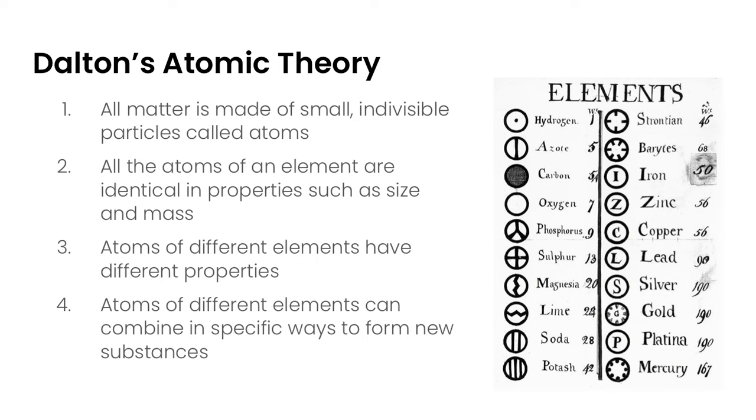We're going to start with Dalton's atomic theory because this is really the groundbreaking theory that helps us understand everything we know about atoms to date. He came up with four key pieces to his theory. The first is that all matter is made up of small indivisible particles called atoms.